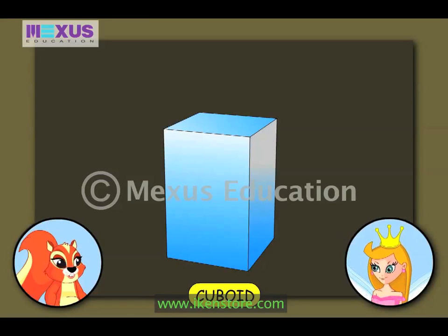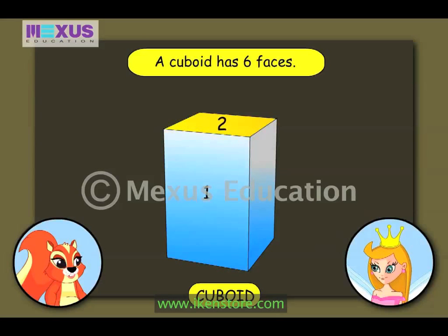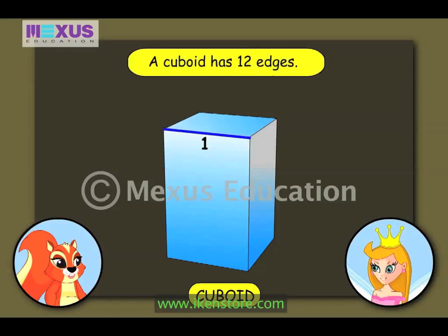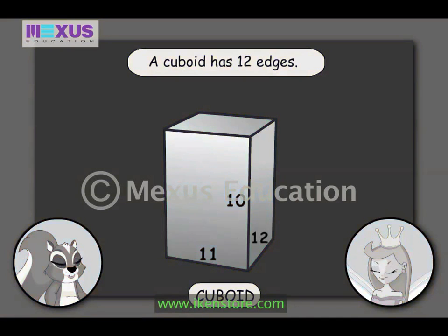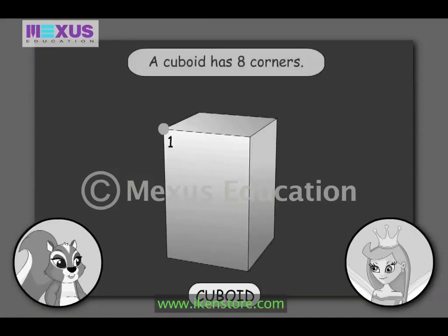A cuboid is like a longer cube. A cuboid also has 6 faces, 12 edges, and 8 corners.